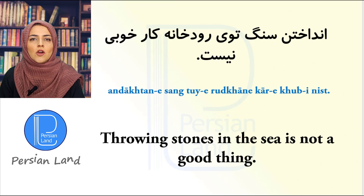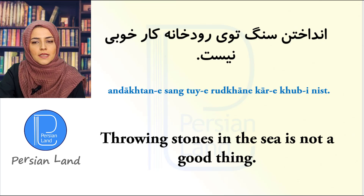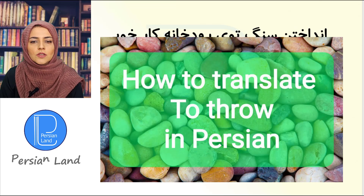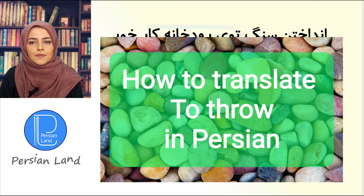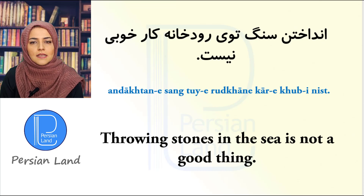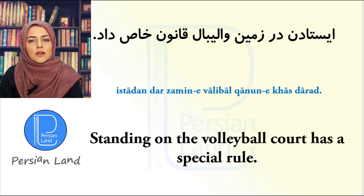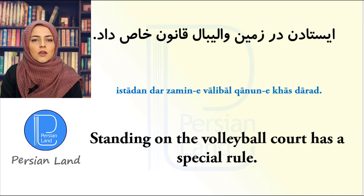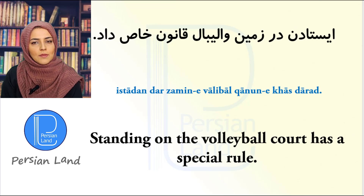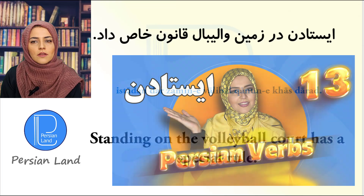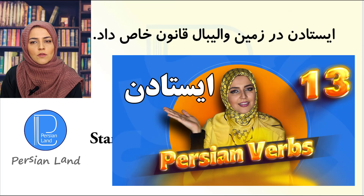انداختن سنگ توی یه رودخانه کار خوبی نیست. انداختن means 'to throw'. I have one clip about how to translate 'to throw' in Farsi — I put the link in the description. توی یه رودخانه means 'in the river, in the sea'. کار خوبی نیست — 'it's not a good thing'.